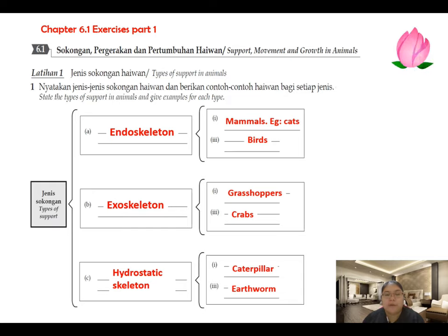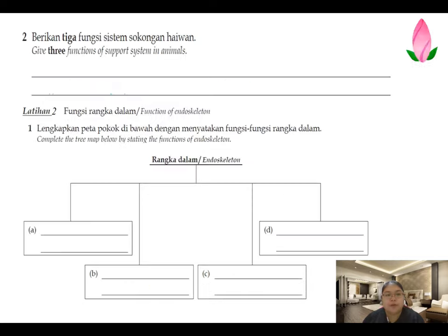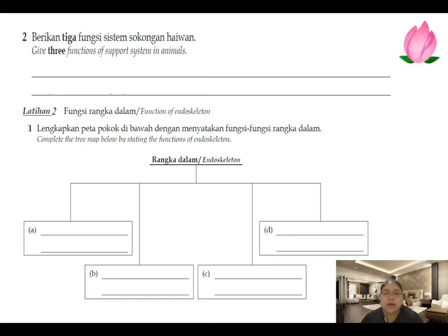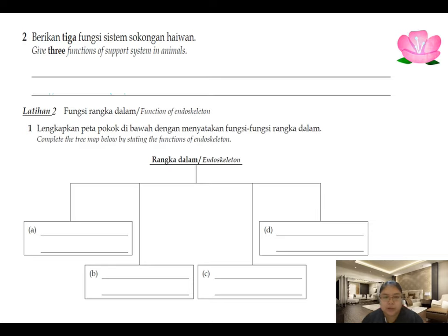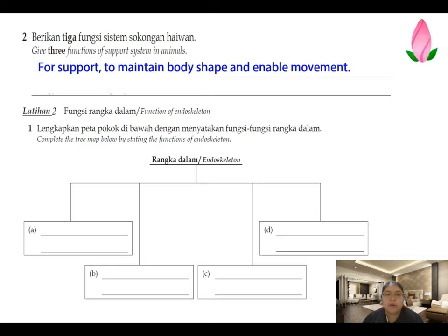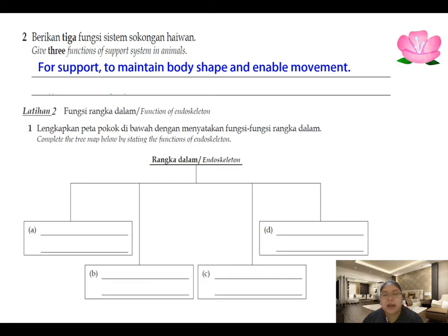The second question asks for three functions of the support system in animals. For endoskeleton, exoskeleton, and hydrostatic skeleton, the main functions are: support, maintain the shape, and enable movement. These are the three main functions for all three types of skeletons.